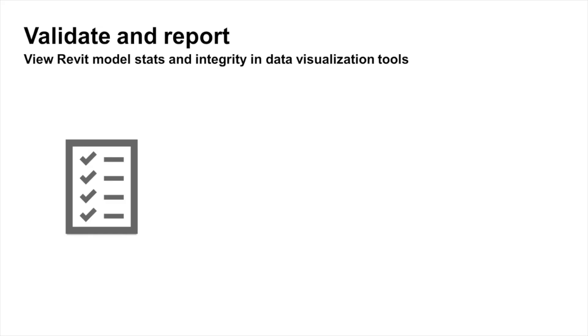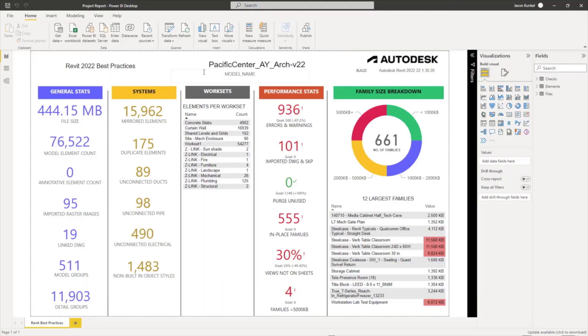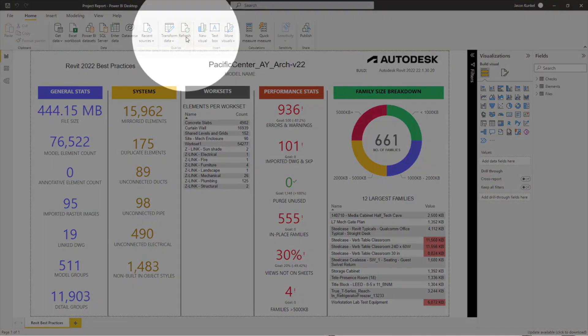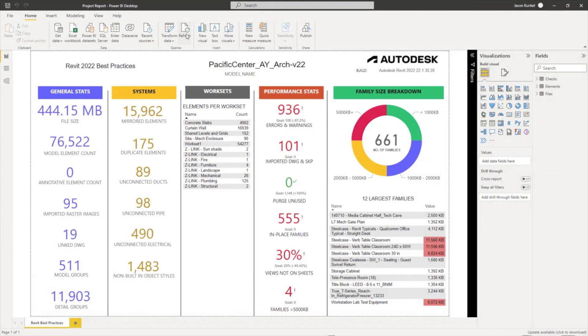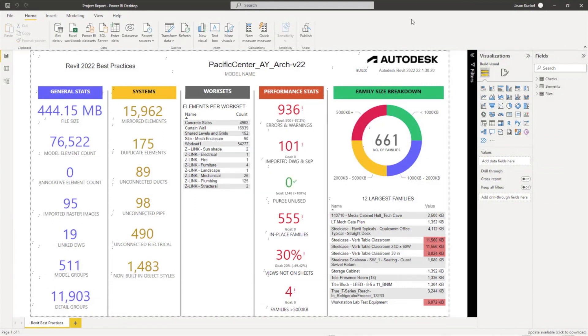The resultant of both of these validation sets is a Microsoft Excel file, which can be consumed in more high-end analytical tools such as Microsoft Power BI. In fact, Autodesk has created a Power BI template so that you can consume the results of these best practice checks and asset information checks immediately.